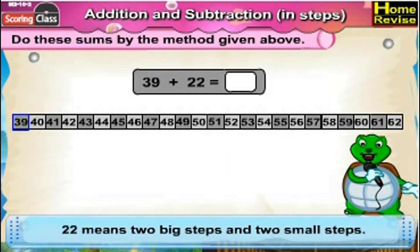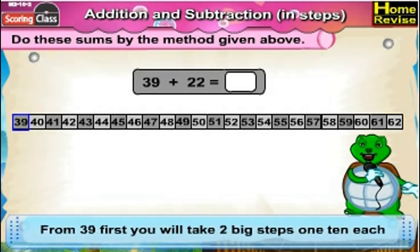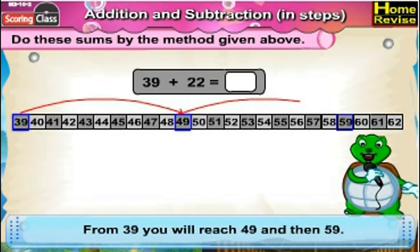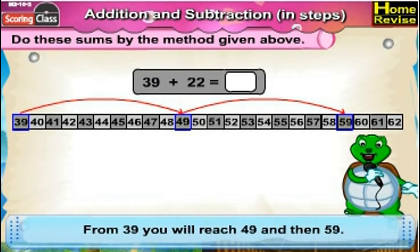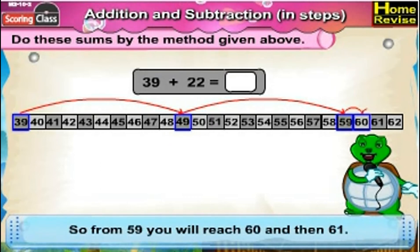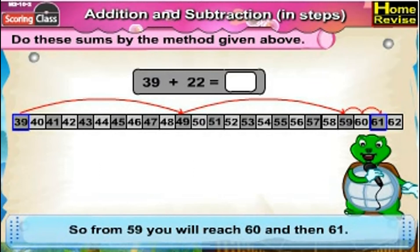Number 3: 39 plus 22. Now, 22 means two big steps and two small steps. From 39, first you will take two big steps of 10 each, so from 39 you'll reach 49 and then 59. Now you will take two small steps of 1, so from 59 you'll reach 60 and then 61. Which means 39 plus 22 is 61.